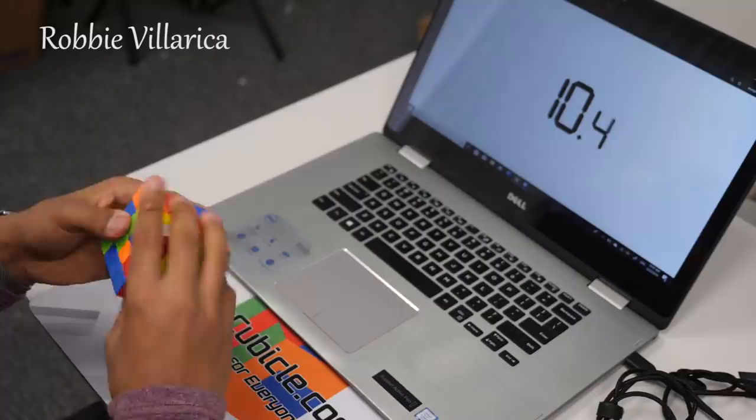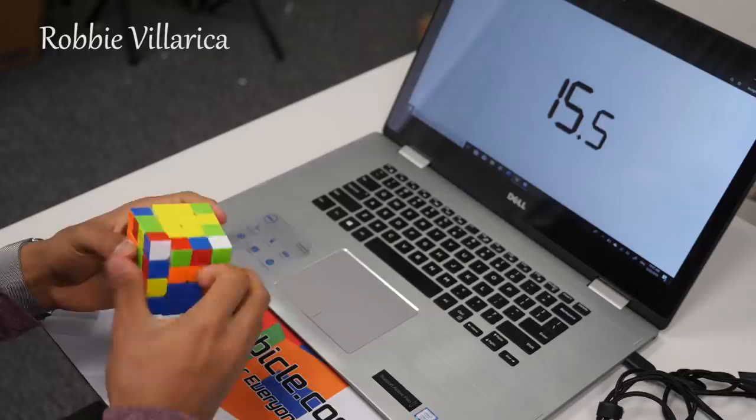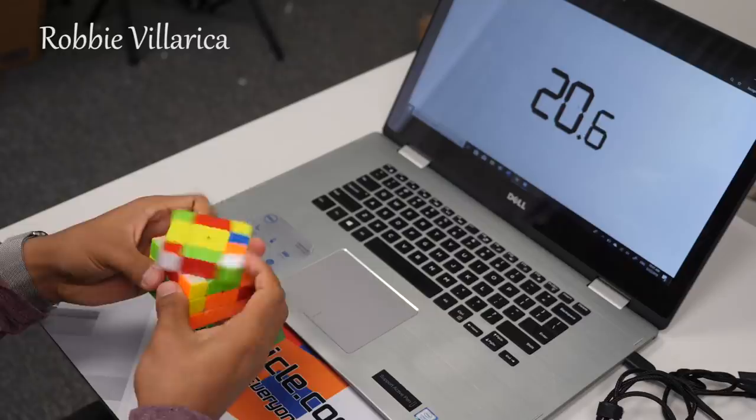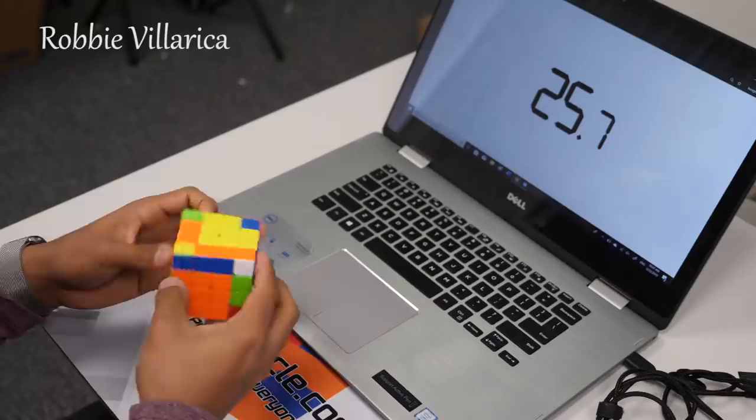Compared to the Wu Chui, it feels more stable and smooth. I prefer the Valk 4 with its strong magnets because it fits my rough turning style. I have not been excited for a 4x4 in a really long time, so I am looking forward to getting my own soon.